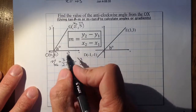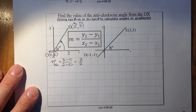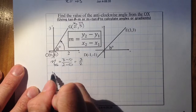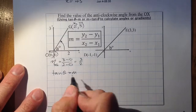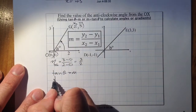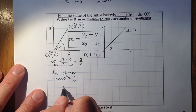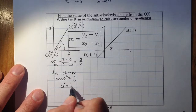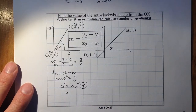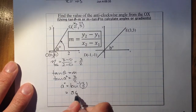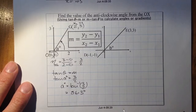To work out angle a, I use the formula tan θ equals m. Substituting in, tan of a degrees equals 3 over 2. Taking the inverse tan of 3 over 2 and entering it into the calculator gives a equal to 56.3 degrees.